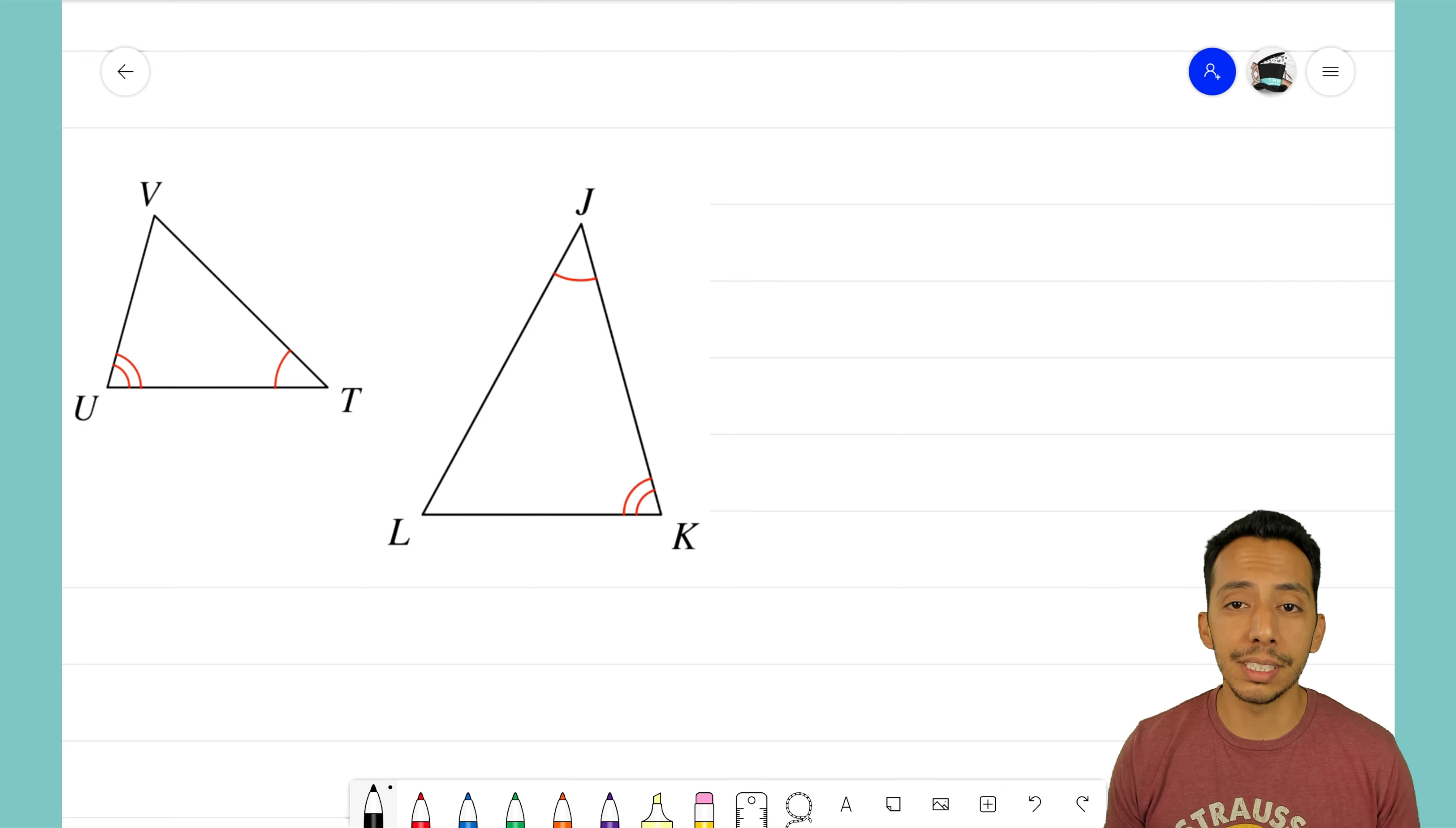Now looking at these two triangles, I notice that angle T has one mark on it and angle U has two marks. When I jump over to the second triangle, I also see that angle J has one mark just like angle T does, and angle K has two marks just like angle U.